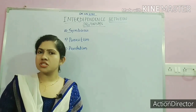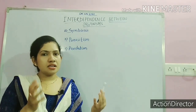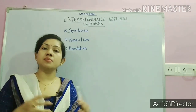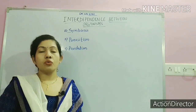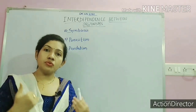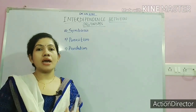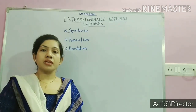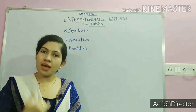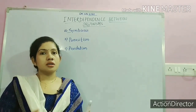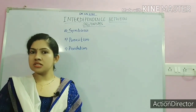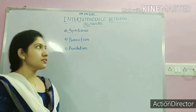Whenever we are talking about the food chain or food web, you might have observed that there needs to be an interdependency among organisms. Without interdependency, the food chain will not exist in an ecosystem — the food chain will be hampered. So let us discuss some of the types of interdependency between organisms.